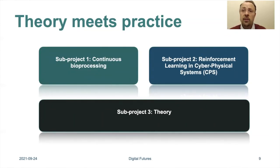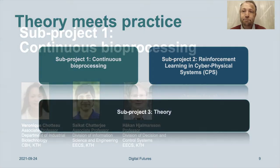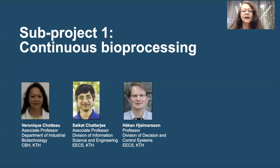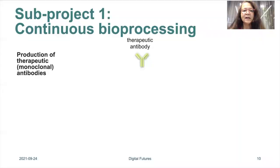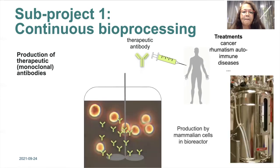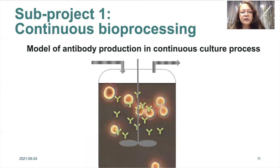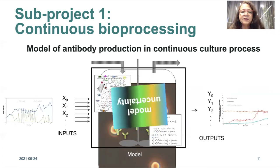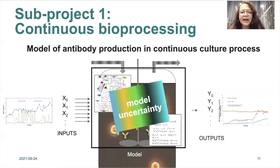Now my colleagues will present each sub-project one by one. Sub-project one is about continuous bioprocessing, involving three of the PIs. The focus is continuous bioprocessing for the production of therapeutic antibodies. Antibodies are large molecules used for the treatment of cancer or diseases like rheumatism, and they are produced in bioreactors by mammalian cells. At KTH we are working on continuous production of these molecules, supported by mathematical modeling, though that modeling has some uncertainty.